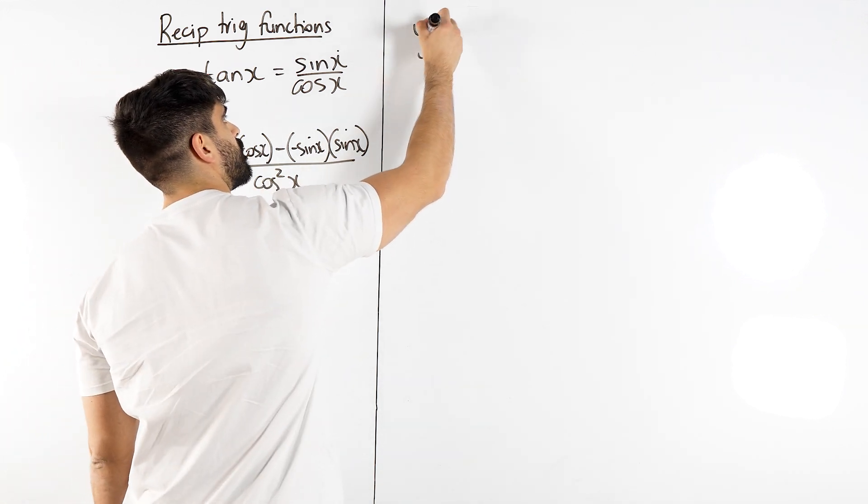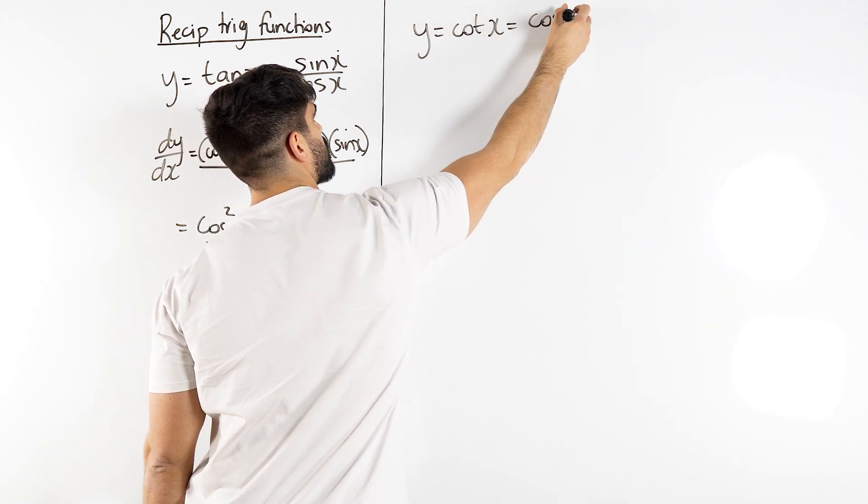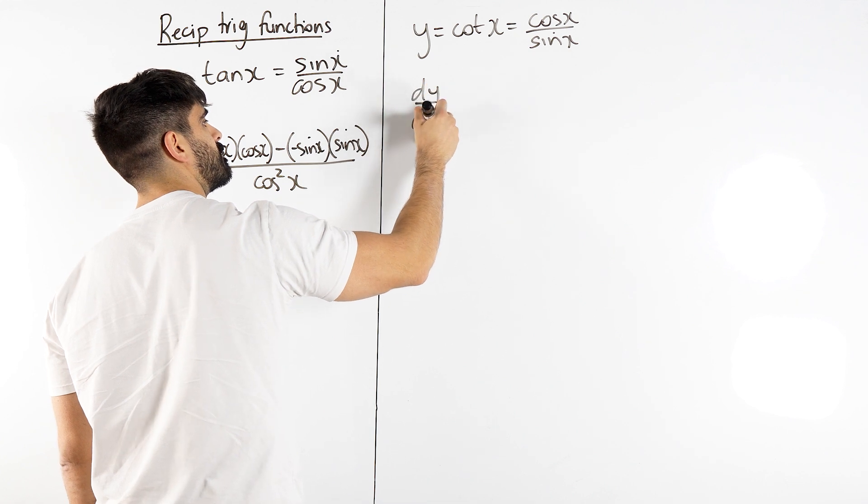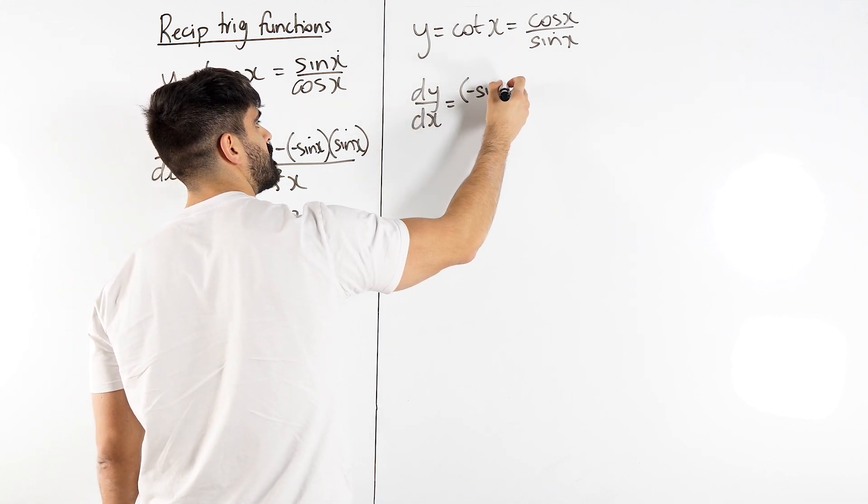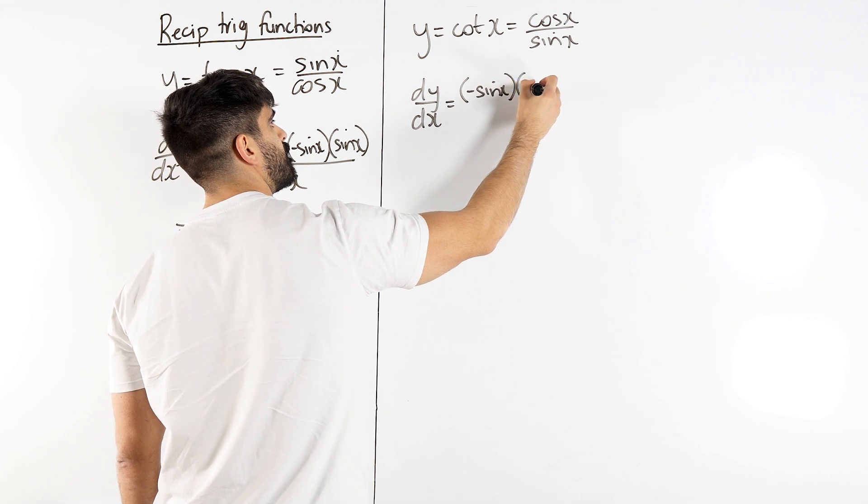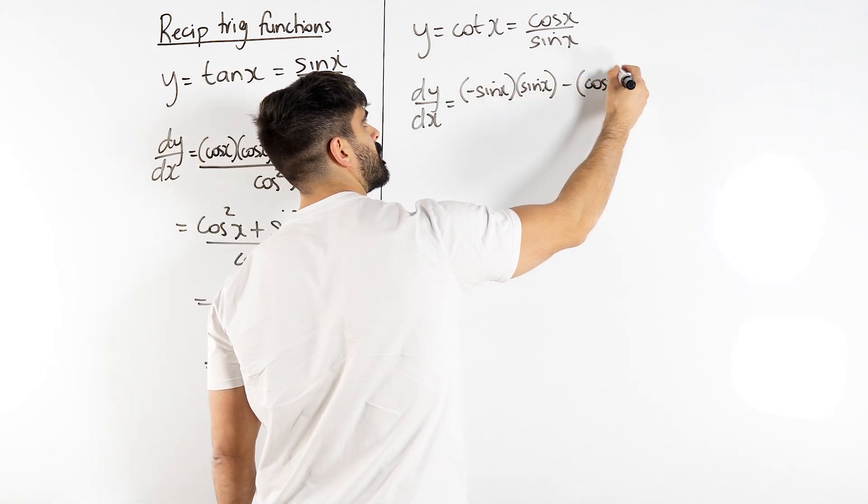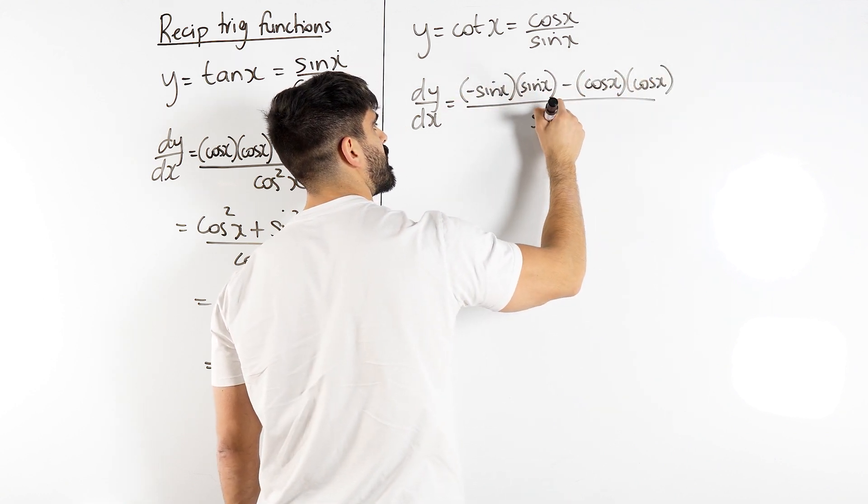Let's do the same thing with cot. This should be pretty simple now that we know the process. Cot is cos over sin. Then we do the same thing, differentiate the top, cos differentiates to minus sin times the bottom, minus differentiate the bottom times the top, all over the bottom squared.